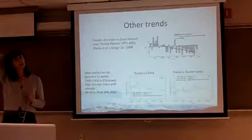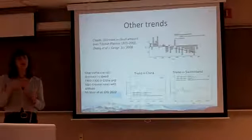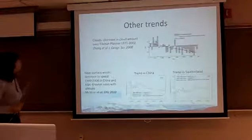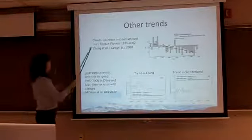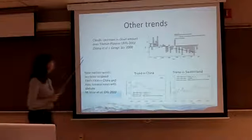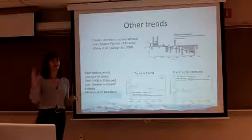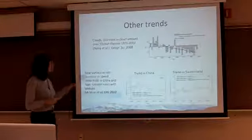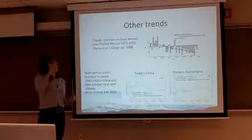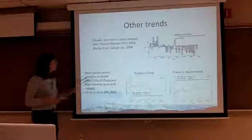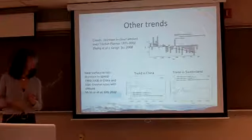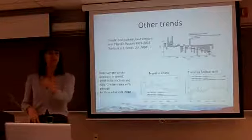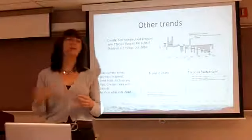So temperature is increasing at high elevation, and it seems to be increasing more rapidly than anywhere else, and also increasing more as you go up in elevation. Other things have been found to change as well. One study looking at cloud amounts used observations over the Tibetan Plateau from 1970 to 2002 and found, on average, a decrease in cloud amounts, consistent with an increase in temperature. Other people looking at near-surface winds found that in both China and the Alps, they see a decrease in wind speed at high elevation.